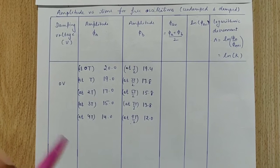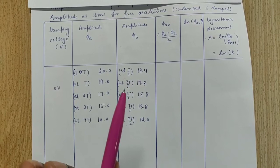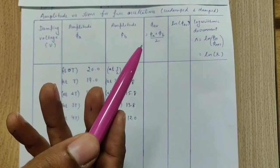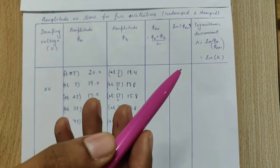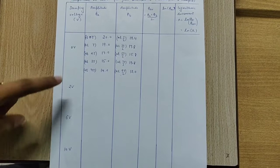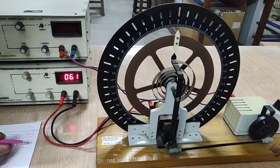On the right-hand side, the times are the half-integral multiples of the time period: T/2, 3T/2, 5T/2 and so on. After that, we take the average of the maximum amplitude on both sides, and then the natural log of the average amplitude. We then calculate the logarithmic decrement, which is the natural log of the ratio of successive amplitudes, equal to the natural log of K, where K is the damping ratio. We will repeat the same procedure for 2V, 6V, and 10V, which correspond to the case of damped oscillations.